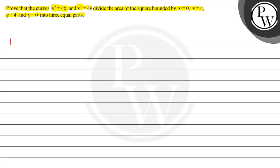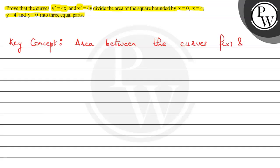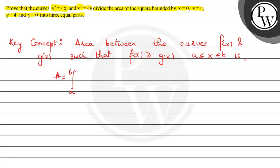For the solution, let's first note down the key concept for this problem. The key concept is: area between the curves. Given functions f(x) and g(x) such that f(x) is greater than or equal to g(x) in the interval a to b, the area in this interval is A equals the integral from a to b of f(x) minus g(x) dx.